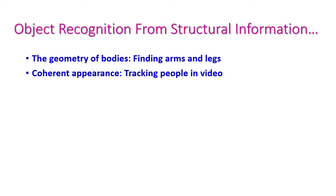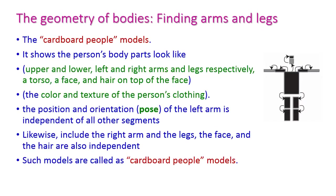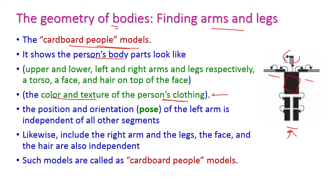In object recognition from structural information there are two subtopics. The first one is geometry of bodies — finding arms and legs of a particular person in the image. To find these arms and legs we can use the cardboard people model. Here we can see how the person's body looks: there are two arms, two legs, and one head, all connected to the person's body.